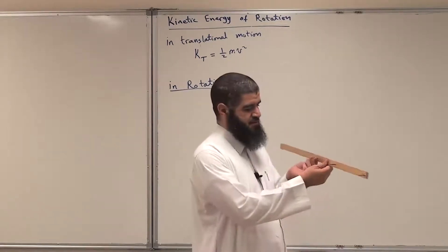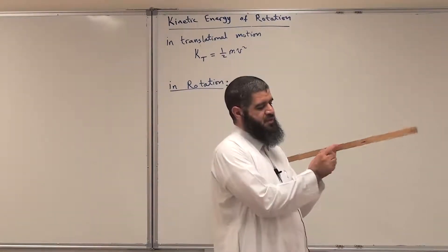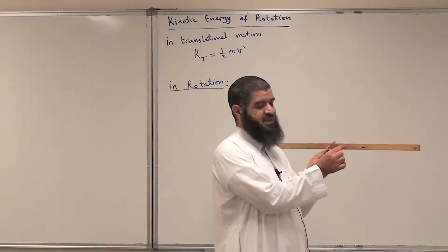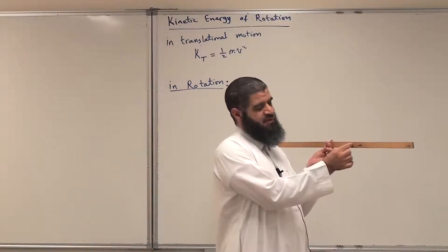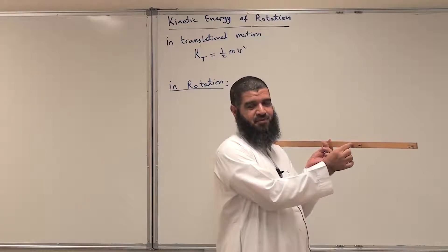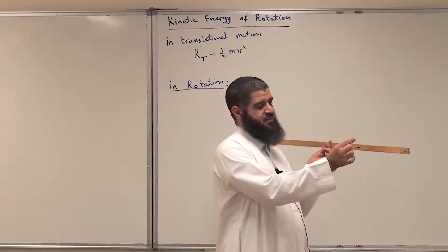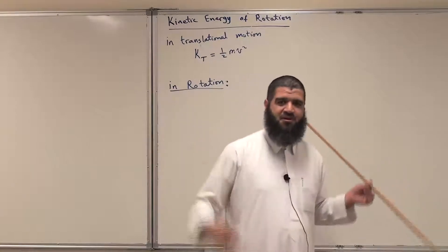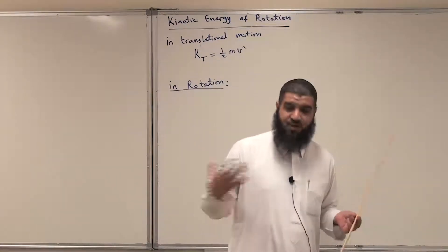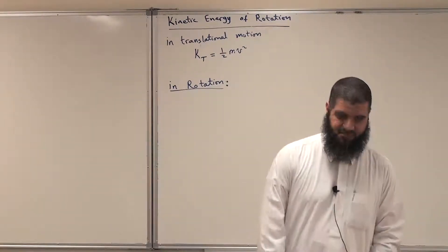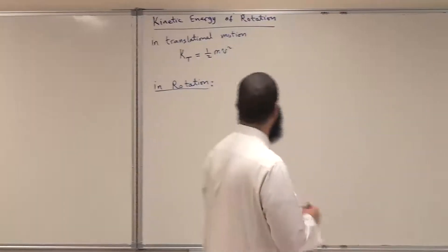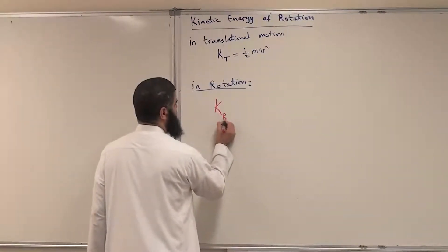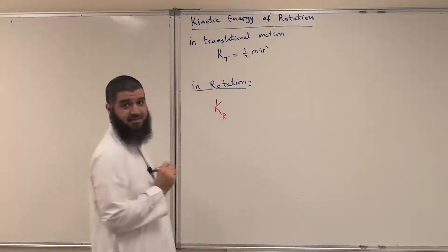If you remember, each point in a rotating object has its own v. A point closer to the axis of rotation has a small v. A point further away will have a larger v, larger v, larger v. So each point will have its own v. How do we calculate the kinetic energy then? To calculate the kinetic energy for rotation, let me call it K sub r.